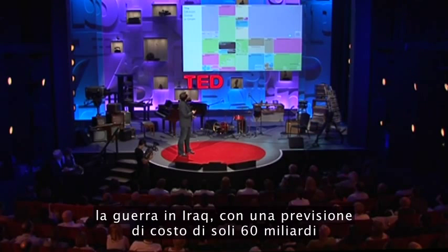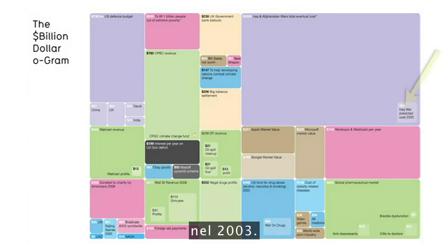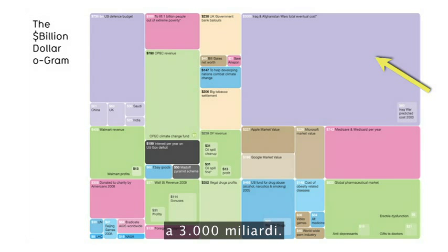And then of course, the Iraq war predicted to cost just 60 billion back in 2003, and the mushroom slightly — Afghanistan and Iraq mushroom now to 3,000 billion.